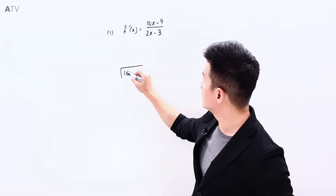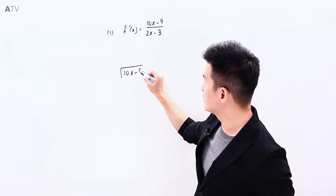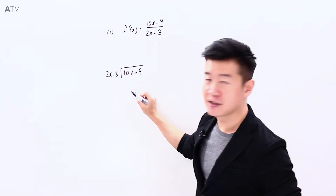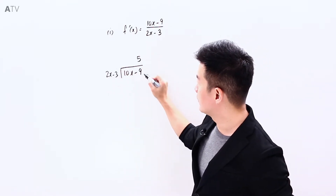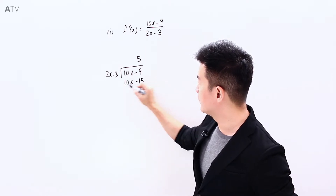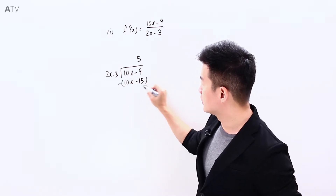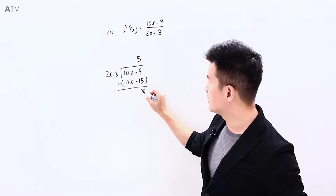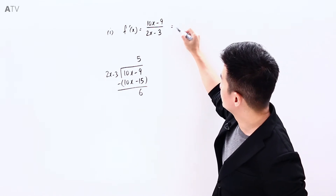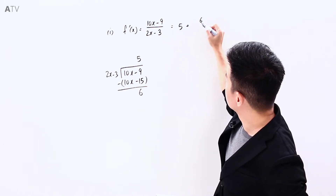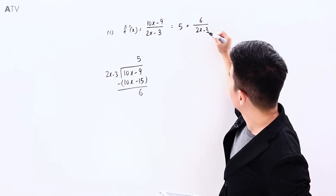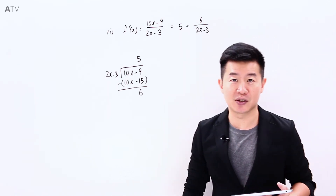So I'll take 10x minus 9 divided by 2x minus 3. Here it's going to be 5. So I have this minus away 15. This minus this is going to give me 6. That means this over here is going to be 5 plus the remainder 6 divided by 2x minus 3.